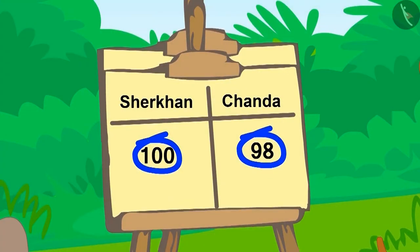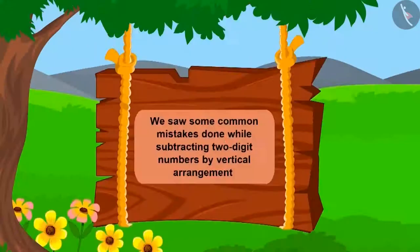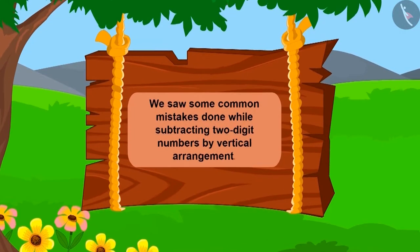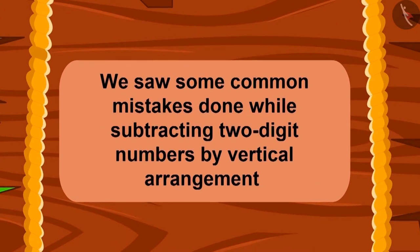Sher Khan, who is now two points ahead of Chanda, has won the competition. Children, in this lesson we saw some common mistakes while doing subtraction of two-digit numbers by vertical arrangement.